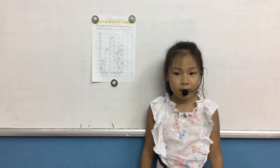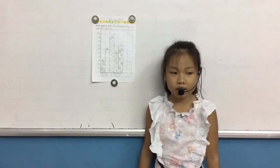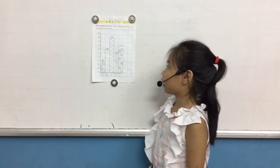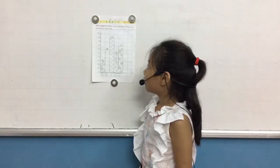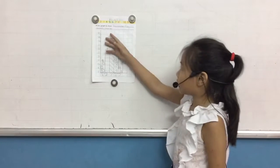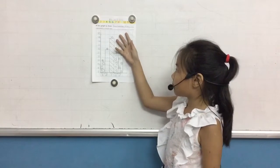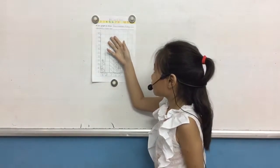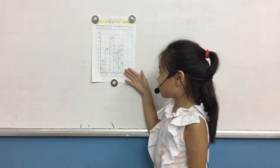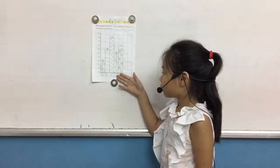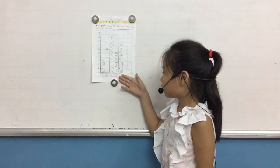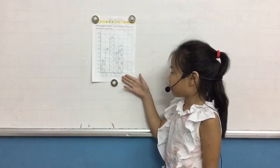Hello everyone, my name is Wilming. Today I'm going to talk about a bar graph to show the number of my classmates' school items. There are school bags, rulers, erasers, notebooks and pencils.